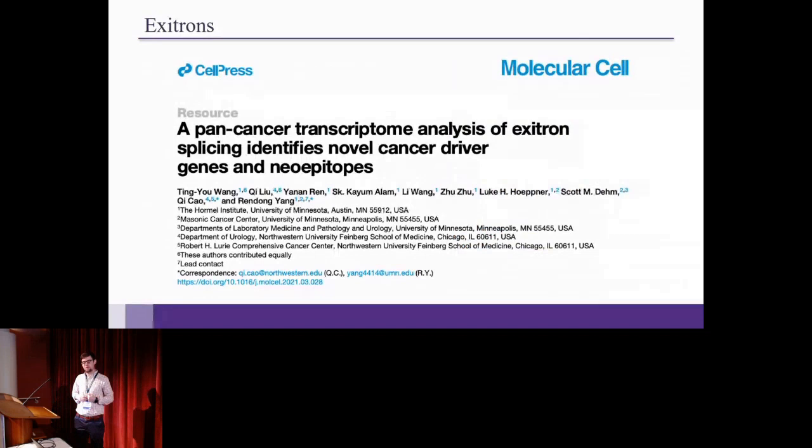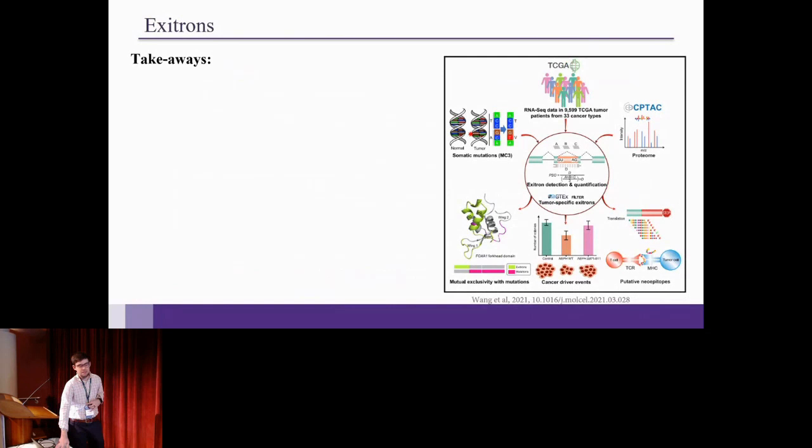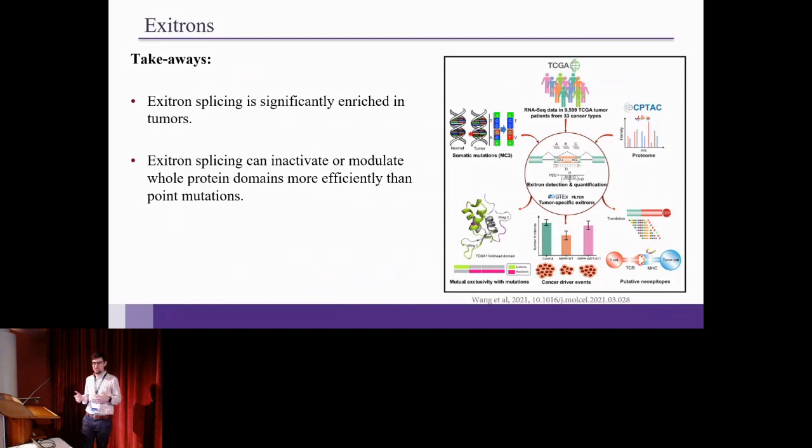So our lab recently published a paper on the pan-cancer transcriptome analysis of exotron splicing events, and they showed that exotron splicing events can be novel cancer drivers. I just want to say a few quick takeaways of this study because I'm sort of building on this study. One is that exotron splicing is significantly enriched in tumor samples. They looked at basically 10,000 TCGA tumor samples and 10,000 GTEx samples, and they compared the exotrons that you can detect between the two types of samples. They also looked at CPTAC data and proteomic data and mutations, and they showed that exotron splicing can inactivate and modulate whole protein domains sort of more efficiently than point mutations. Point mutations can change a single amino acid, but an exotron splicing event can splice out a full protein domain.